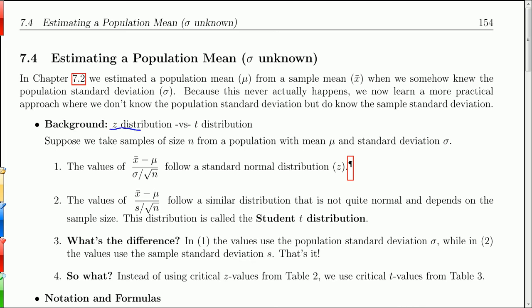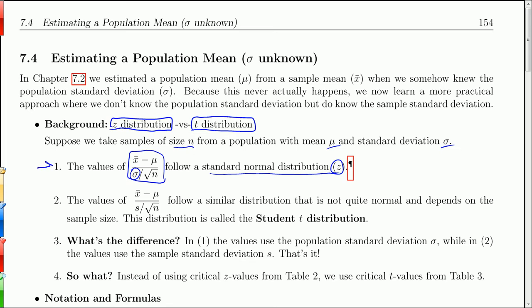Here's a little background. We have the Z distribution, which we've been doing for a couple of chapters, but there's another distribution called the T distribution. Suppose you take samples of size n from a population with mean mu and standard deviation sigma. The values of all the sample means minus the population mean over the standard deviation divided by the square root of n follow a normal distribution — the Z distribution — contingent upon sample sizes bigger than 30 and/or the population being normally distributed. We used a Z distribution because we somehow knew sigma.